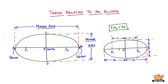Now let us look at the major axis. From one end, let's say this is A and this is B. The length of the major axis is 2A, because from the center to one end of the major axis measures A, and from the center to the other end also measures A. So the total distance of the major axis is 2A, and OA is equal to OB.